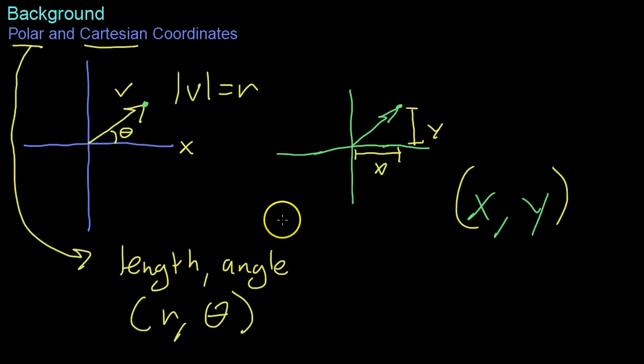And you can actually transition from one coordinate system to the other. For example, to get the length R, use the Pythagorean theorem. R squared equals x squared plus y squared, because this forms a right triangle where R is the hypotenuse and x and y are the two smaller sides.